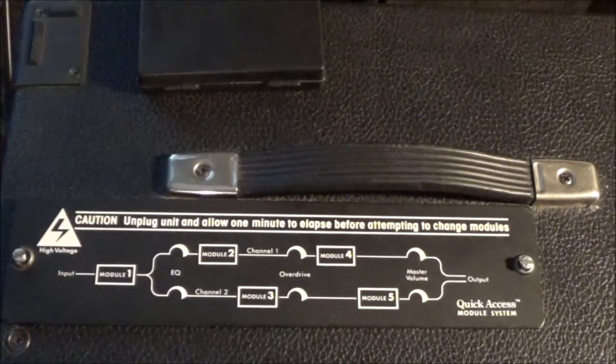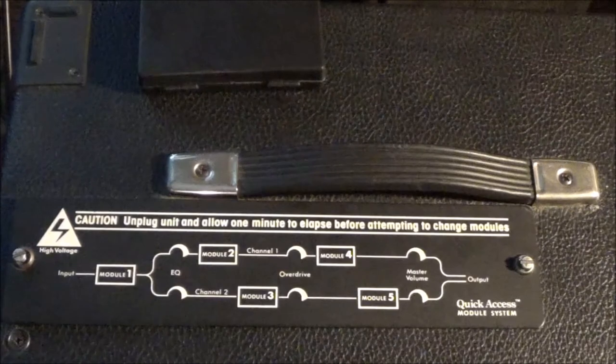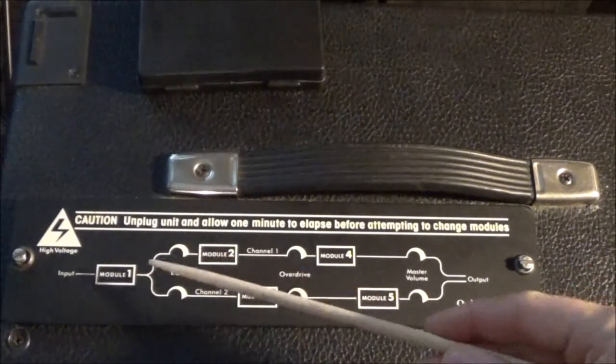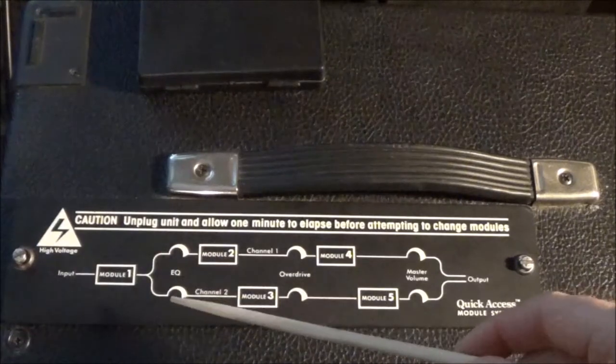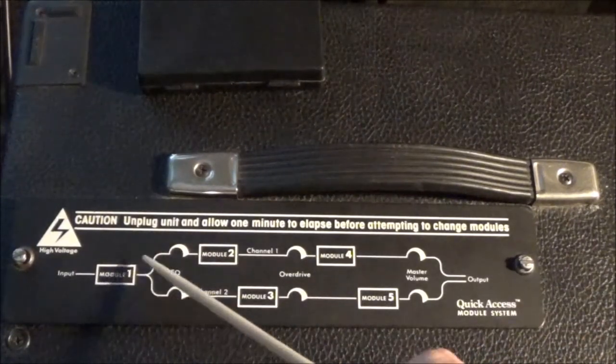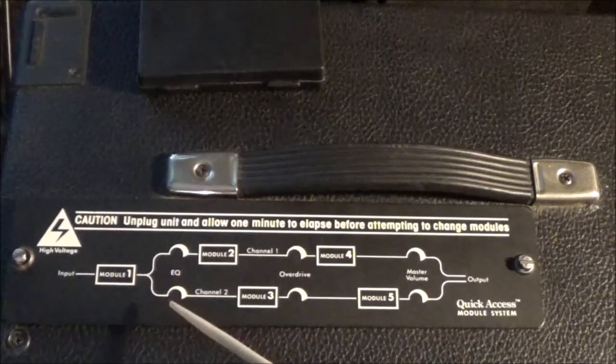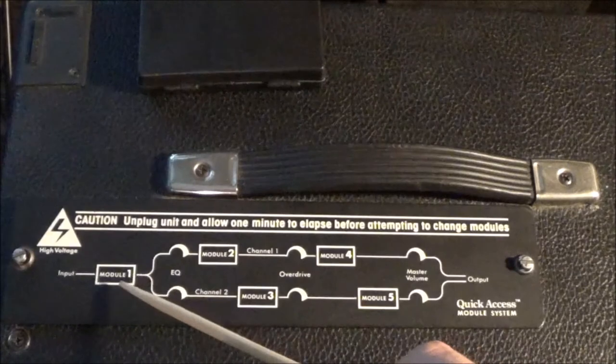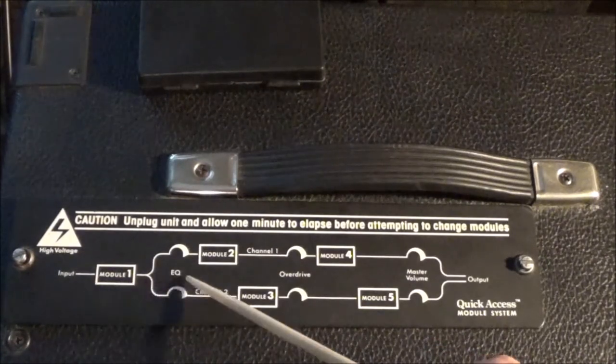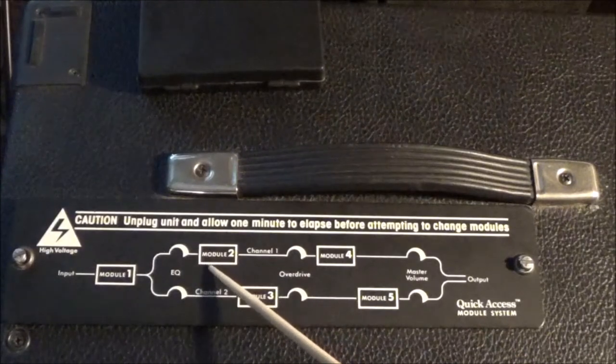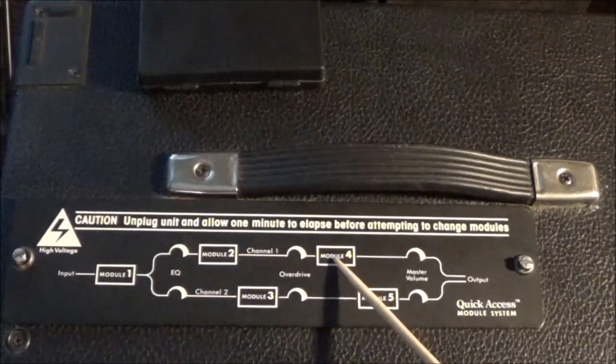As you can see, there's this little cover plate where the preamp modules go in. The order is: channel 1, which I believe is the red channel, starts with module 1 as the very first one on the chain, module 2 would be next, module 4 following that, and then to the output.